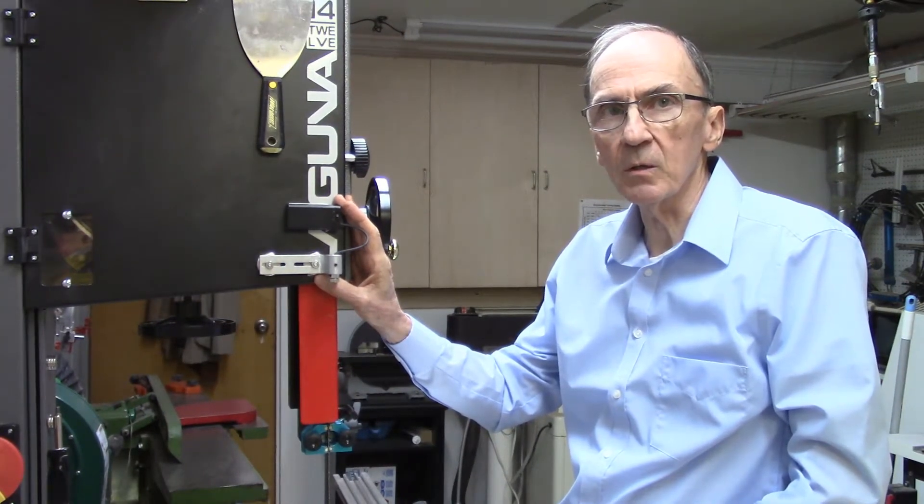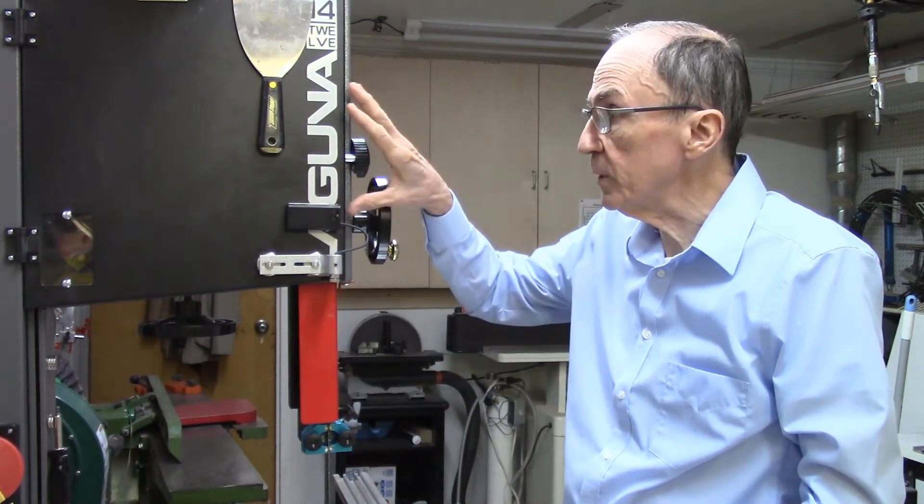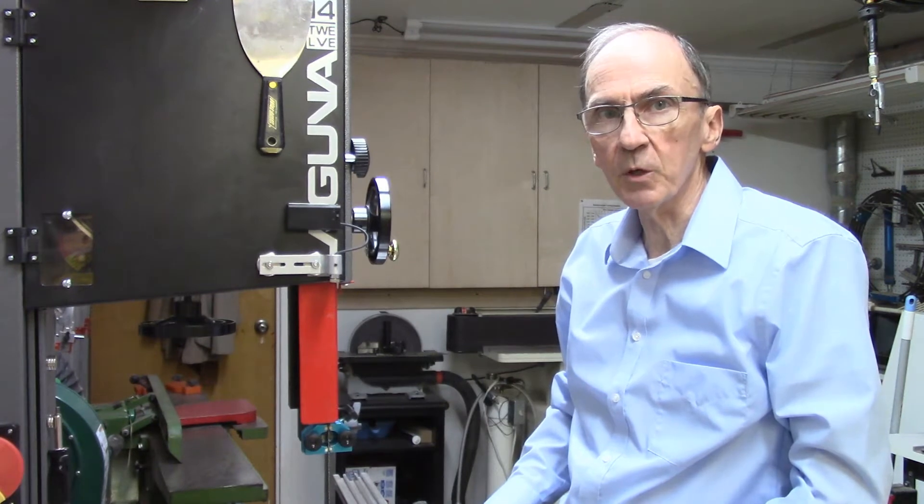This video describes the installation and operation of the new bandsaw laser system. The bandsaw laser system attaches to the top wheel housing on your bandsaw to project a red laser beam onto your work surface to mark the exact path of your bandsaw blade on the board you are cutting.